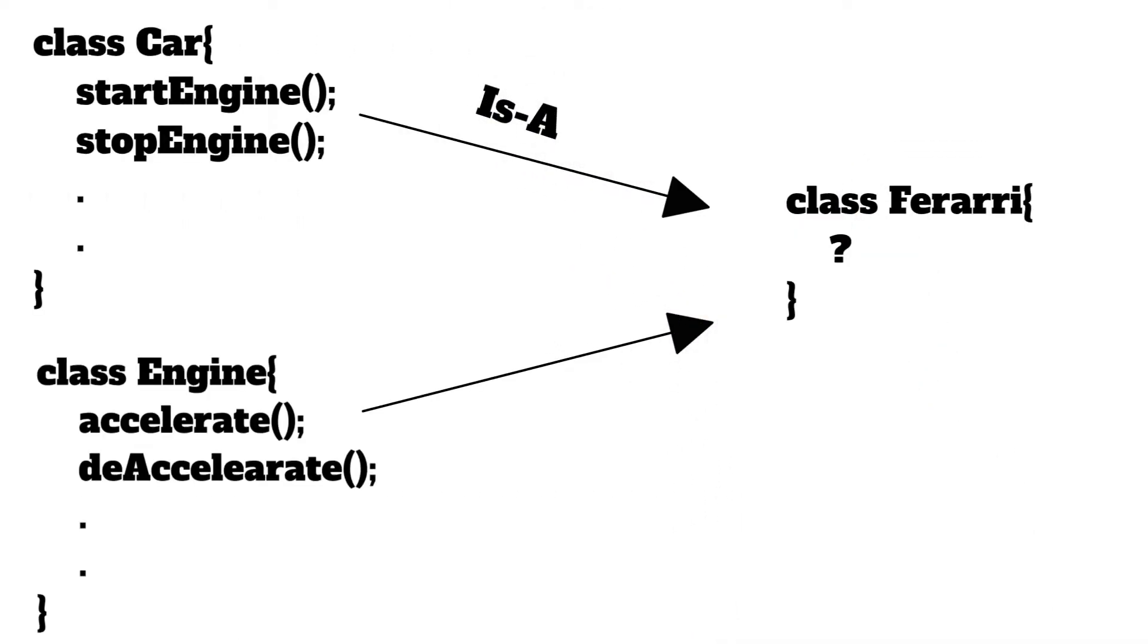In this case, our Ferrari class will use the Car class with an 'is-a' relationship, which means it will use inheritance. Ferrari, however advanced a car it may be, will still be a car. So Ferrari is a car.